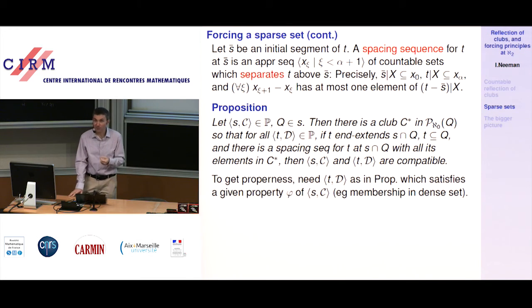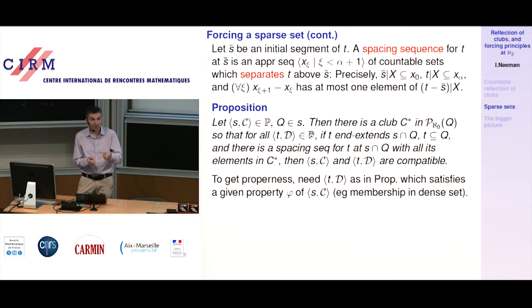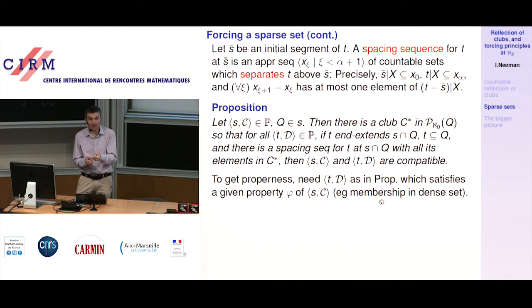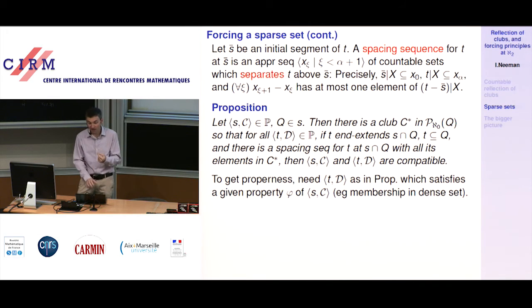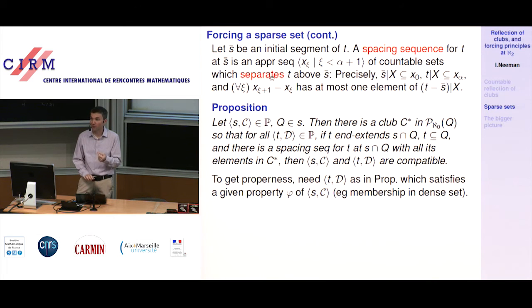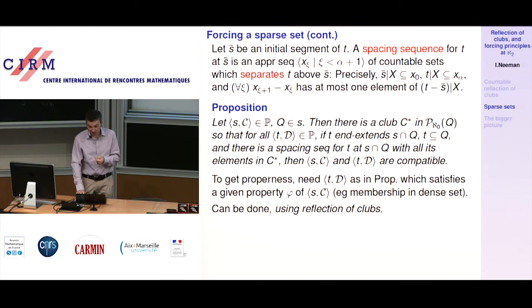To get properness: I need a condition T_d belonging to some dense set, compatible with S-C, satisfying some given property phi. This can be done using countable reflection of clubs. Imagine you couldn't find this T_d — that means whenever you look at some T which is an end-extension of S ∩ Q and satisfies phi, it does not have a spacing sequence. If you found something both having a spacing sequence and satisfying phi, you'd be done.